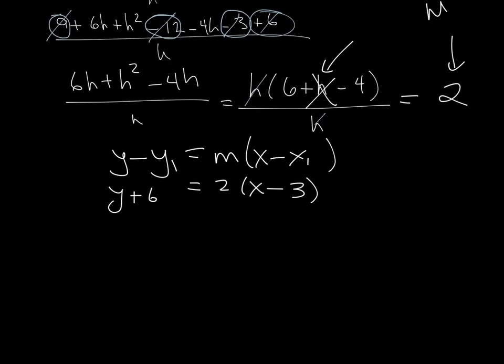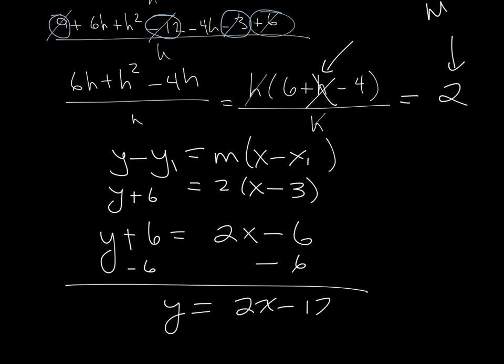So from here I need to solve for y so my math lab is happy. So I distribute the 2, so 2x minus 6. Now I'm going to subtract 6 on both sides and I get y equals 2x minus 12, and there's my answer.